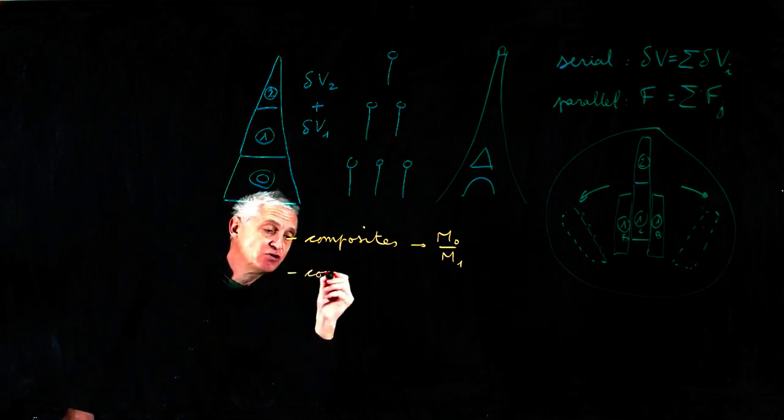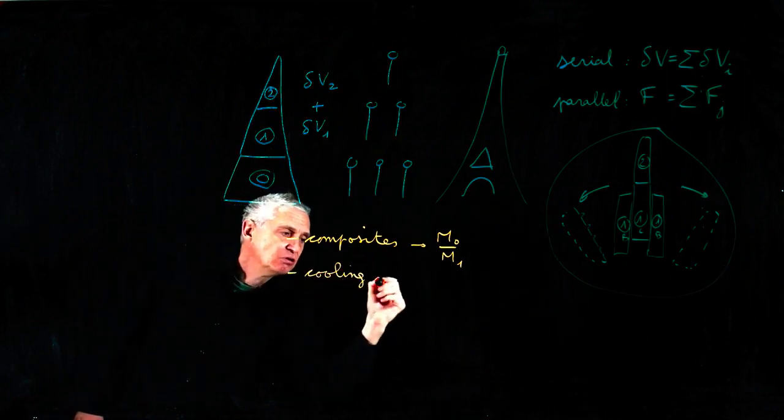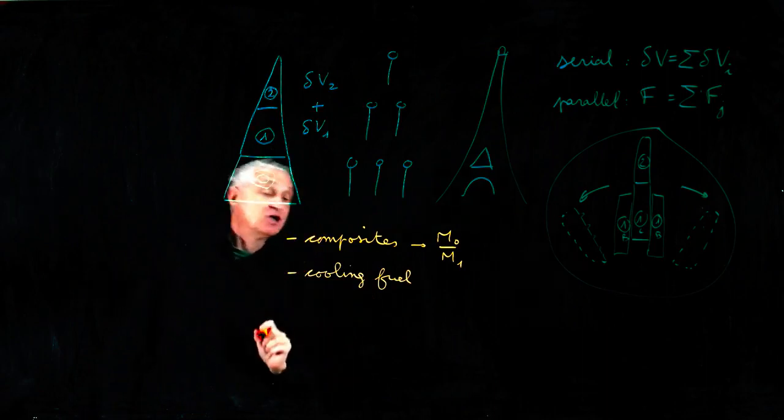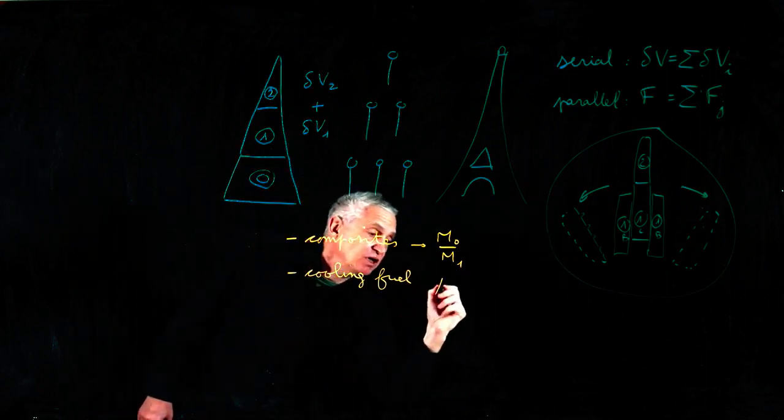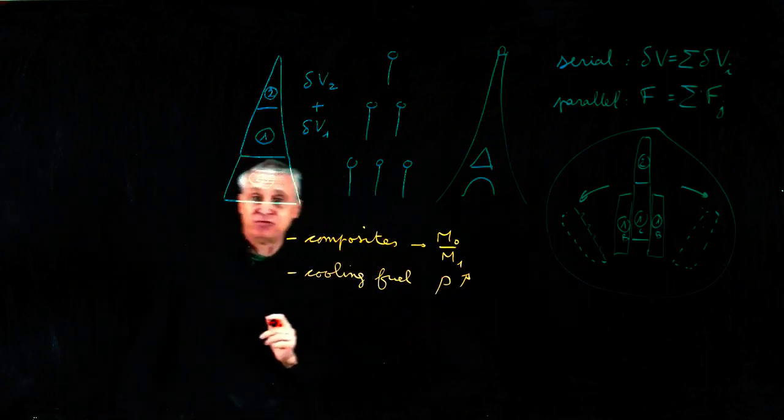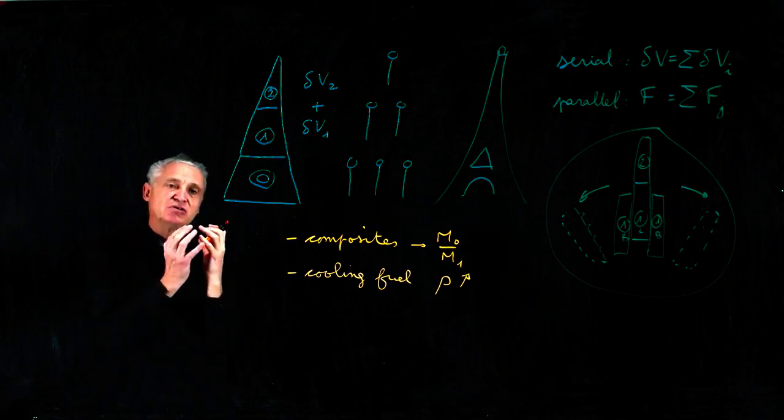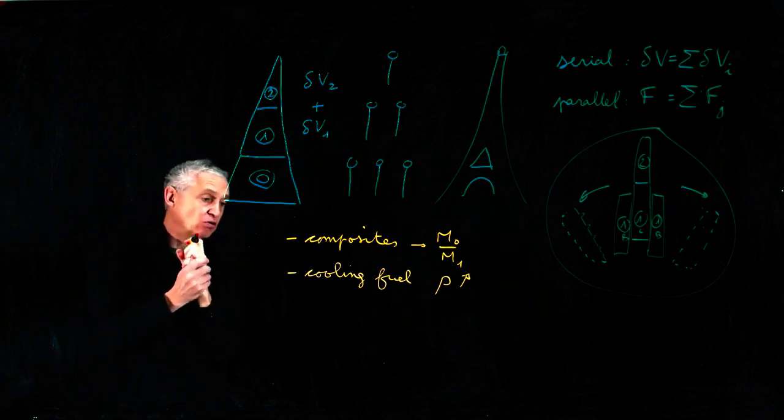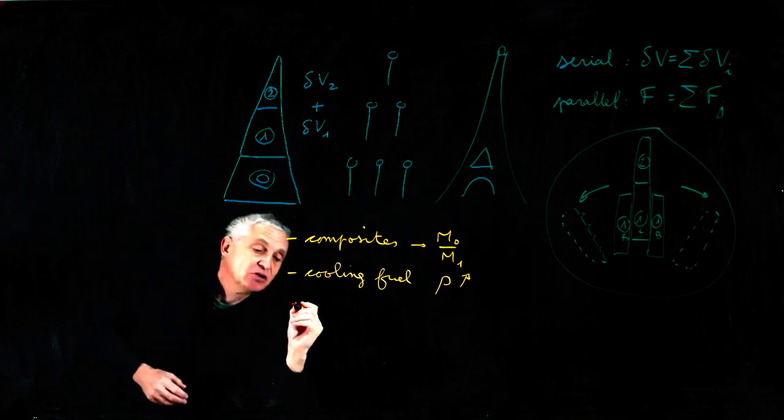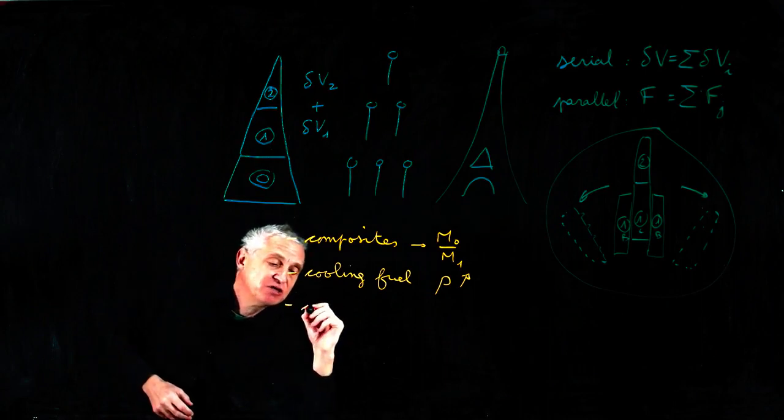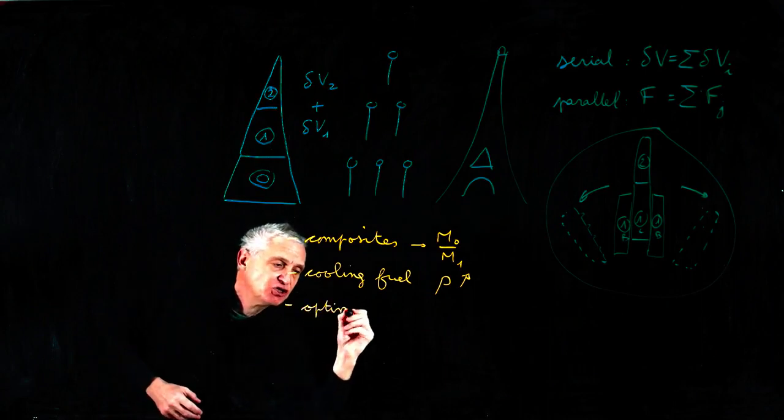This gives the improvement of the structural ratio of any stage. The second one is the cooling of fuel, which improves the density of the fuel and makes the volume of the tanks lower. And the third one is the optimization of the trajectory.